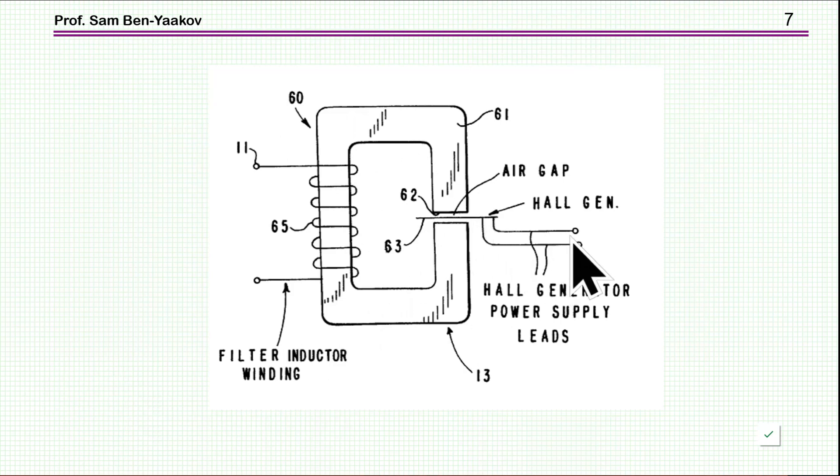So you now get, for free so to speak, the concentration of the field into the sensor, and thereby you get actually a measure of the current in the inductor. This will be a direct measure of the current, isolated, without actually adding anything except for the sensor itself, and you've got already the gap. Of course there is a construction here, a mechanical construction. So this is very clever. I haven't seen any application that actually uses this idea.